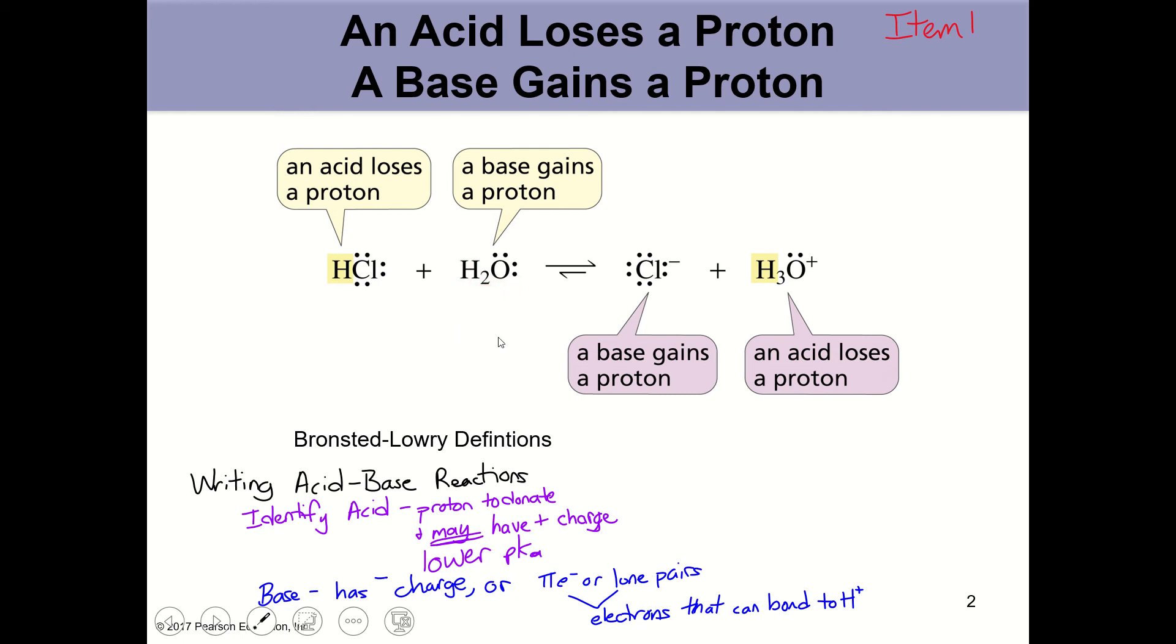What happens is that chloride loses a proton, and when it loses a proton, it keeps the bonding electrons. So we can physically draw this out, and in organic chemistry, we use arrows to show what happens to the electrons when we have a reaction.